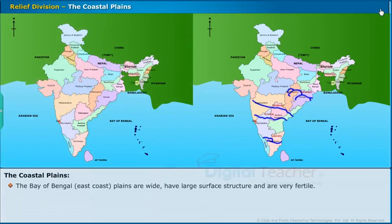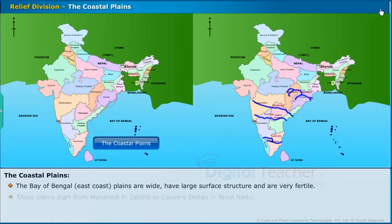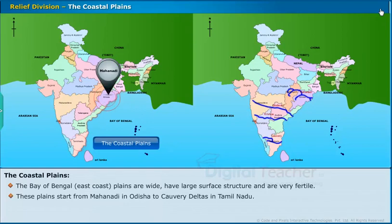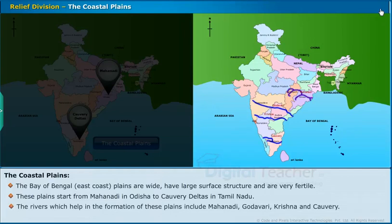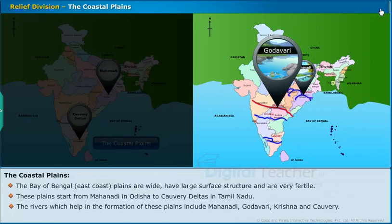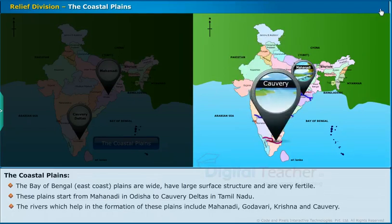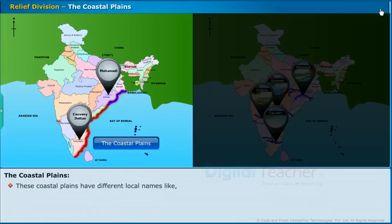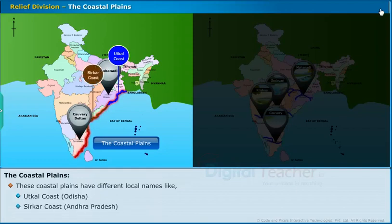The Bay of Bengal East Coast Plains are wide, have large surface structure, and are very fertile. These plains start from Mahanadi in Odisha to Kaveri Deltas in Tamil Nadu. The rivers which help in the formation of these plains include Mahanadi, Godavari, Krishna, and Kaveri. These coastal plains have different local names: Utkal Coast in Odisha, Sirkar Coast in Andhra Pradesh, and Coromandel Coast in Tamil Nadu.